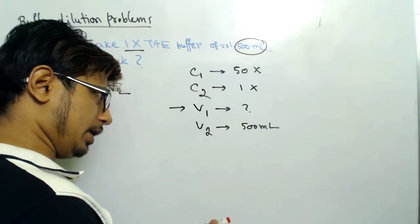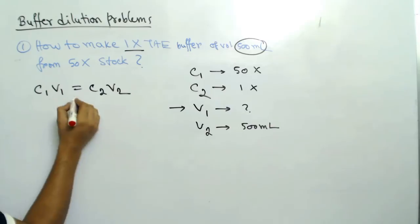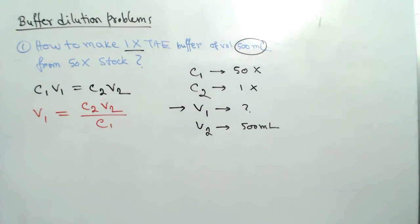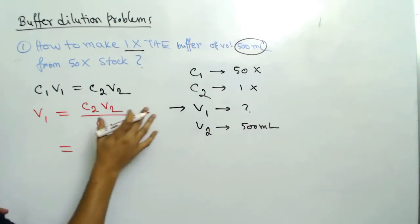In this case we need to calculate V1. So how to calculate V1? We can rearrange the equation like V1 equals C2V2 divided by C1. Now simply plug the data from this table into this equation.